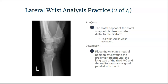Looking at this next wrist projection, it does look like it is in a true lateral projection. However, when we take a closer look, you can see that the distal aspect of the scaphoid is distal to the pisiform. This means that the wrist was in ulnar deviation — that's why the radial and metacarpal articulation is demonstrated as closed as well. So we need to place that wrist in a neutral position by elevating the proximal forearm until the long axis of the third metacarpal and mid-forearm are aligned parallel with the IR.